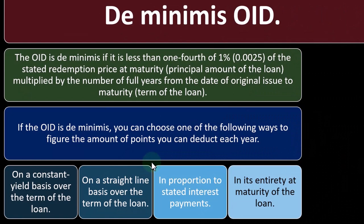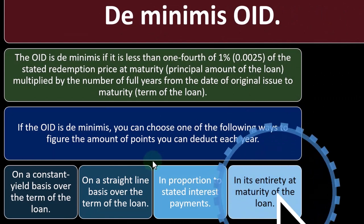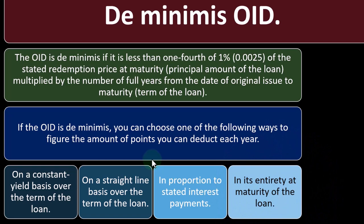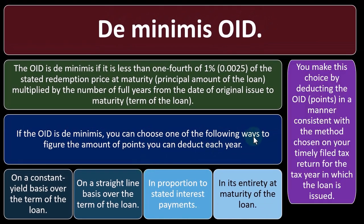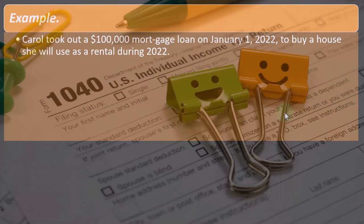Another option is in its entirety at maturity of the loan, which is probably the worst approach, but if the amount is insignificant it won't really matter — though you'd rather deduct it sooner rather than later. You make this choice by deducting the OID points in a manner consistent with the method chosen on your timely filed tax return for the tax year in which the loan is issued.